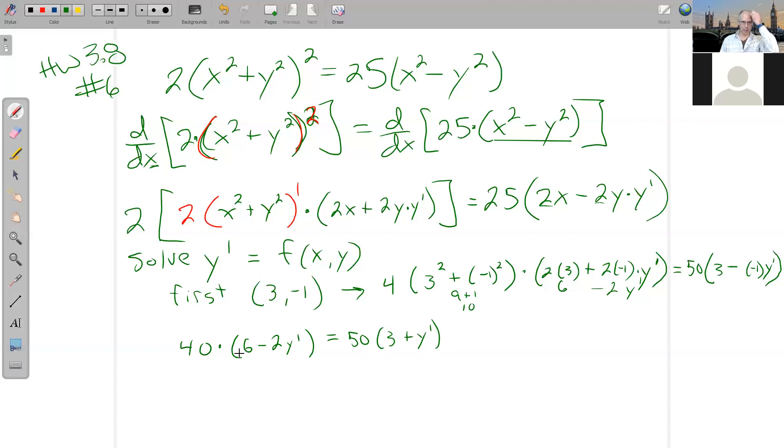On the other side we've got that 50 times 3 plus y prime, and so we need to get the y primes together, so we might as well distribute these back through. So 4 times 6 is 24, so that's 240 minus 80 y prime equals 150 plus 50 y prime. And then let's get the y primes together, let's pull them over to this side, plus 80 y prime over here, and then we'll subtract the 150 over.